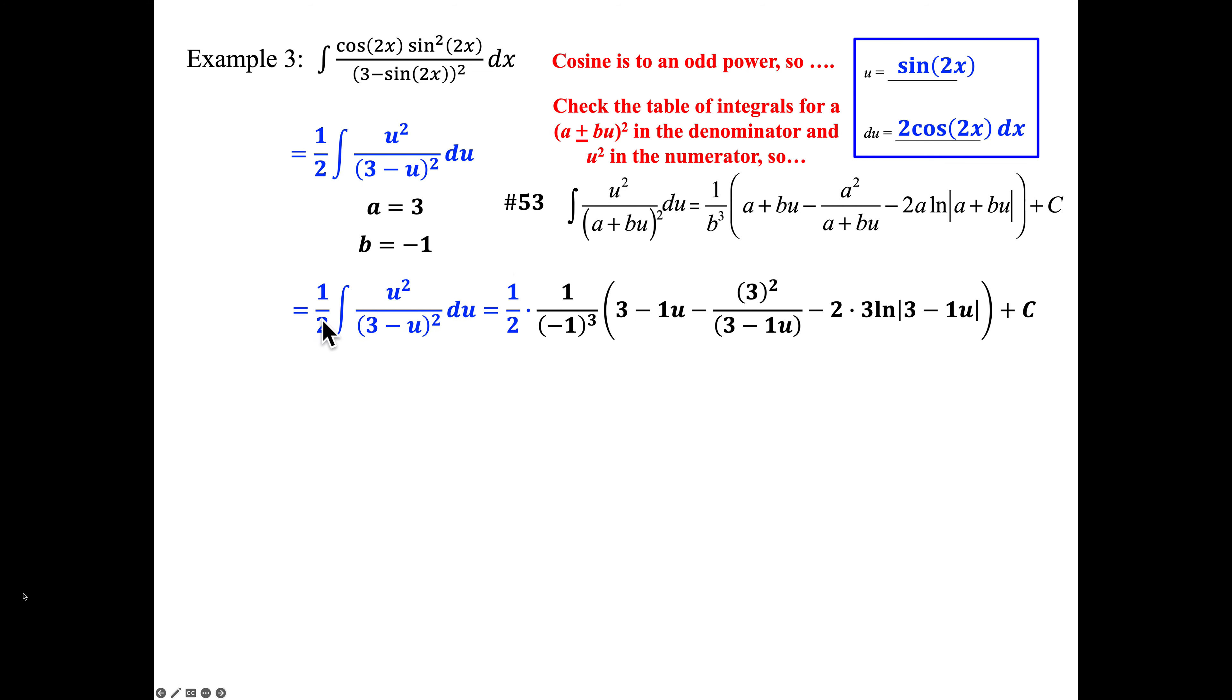One half, that's from the original integral, times 1 over negative 1 cubed, parentheses, A which is 3, plus negative 1 or minus 1U, minus 3 squared over 3 minus 1U, minus 2 times 3 (that's your A), times the LN of 3 minus U in absolute value bars, plus C. If we clean things up, we get 9 in the numerator. Negative 2 times 3 is minus 6. We cleaned up the one half times negative 1 raised to the third power, negative one half.